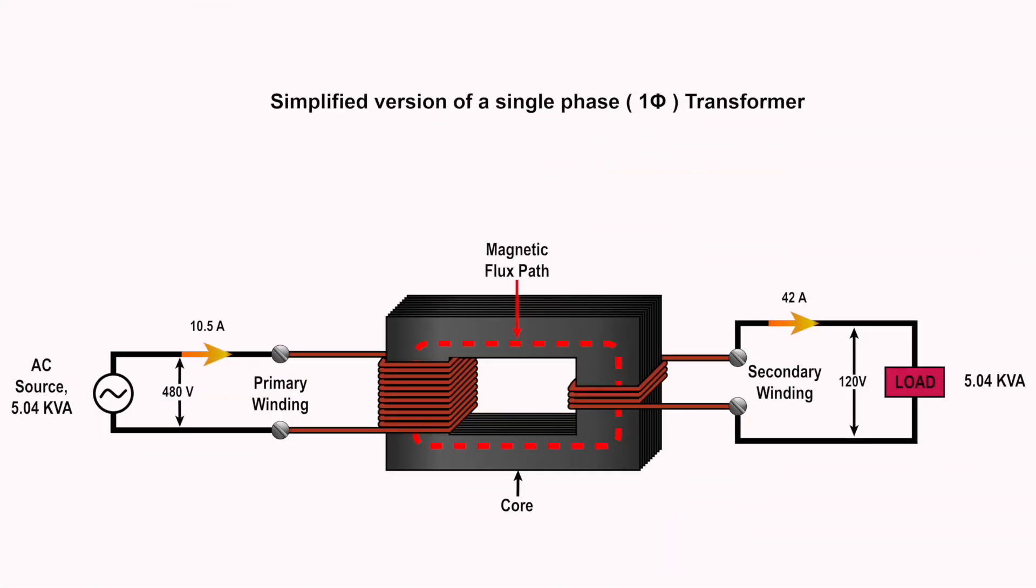Here is a simple version of a single-phase transformer. The transformer consists of two electrical conductors. One is called the primary winding and the other is called the secondary winding. The primary winding is fed from a varying alternating current, which then creates a varying magnetic field around it. The principle of mutual inductance states that the secondary winding, which is in this varying magnetic field, will have a voltage induced into it.